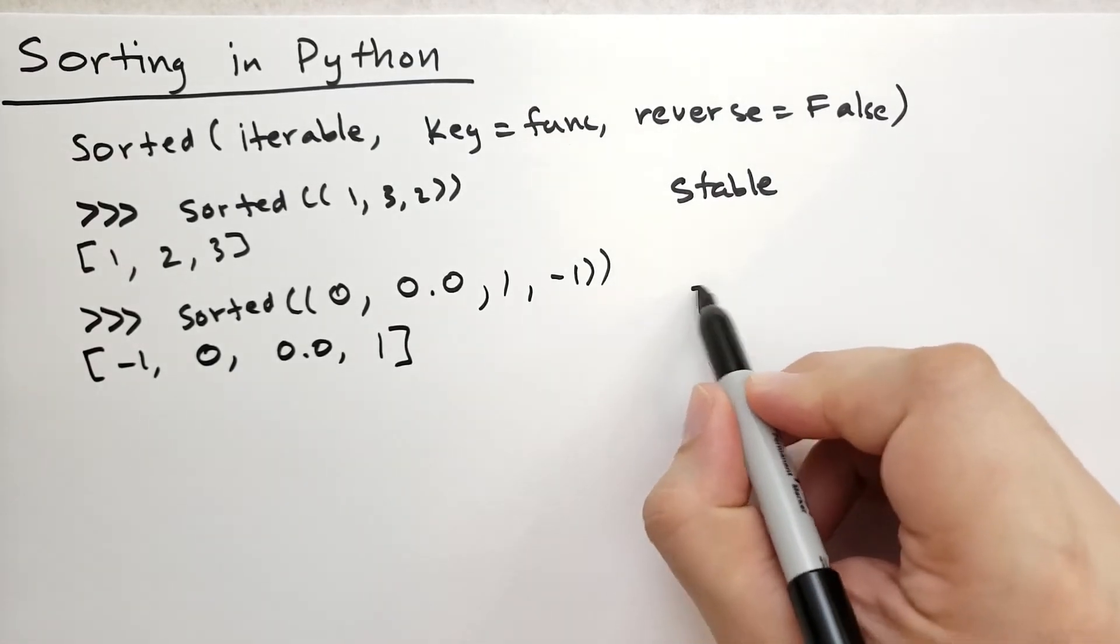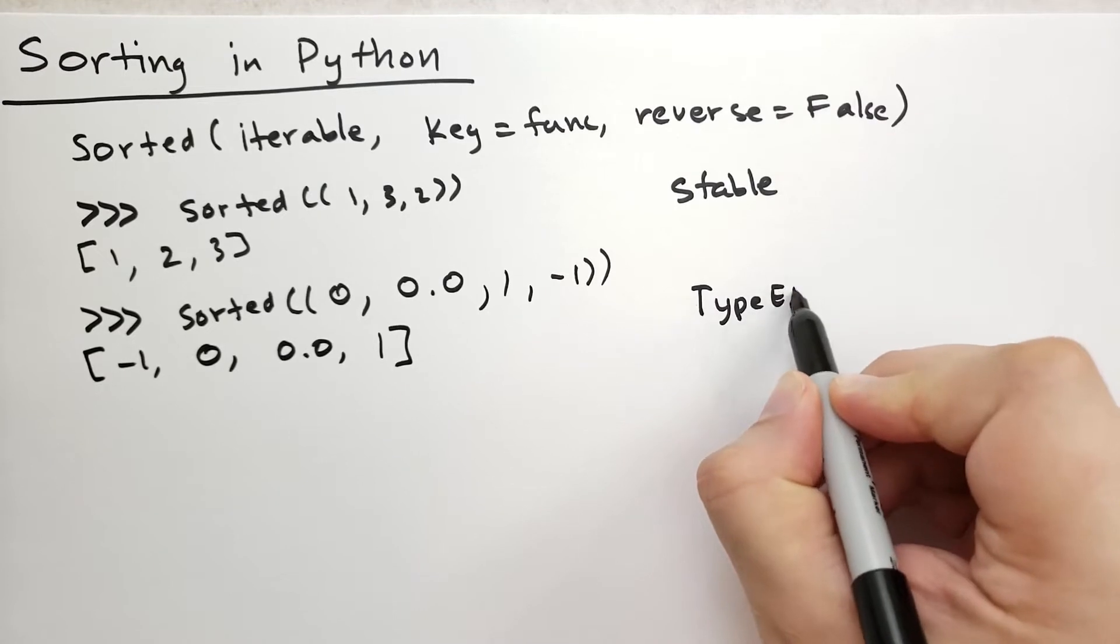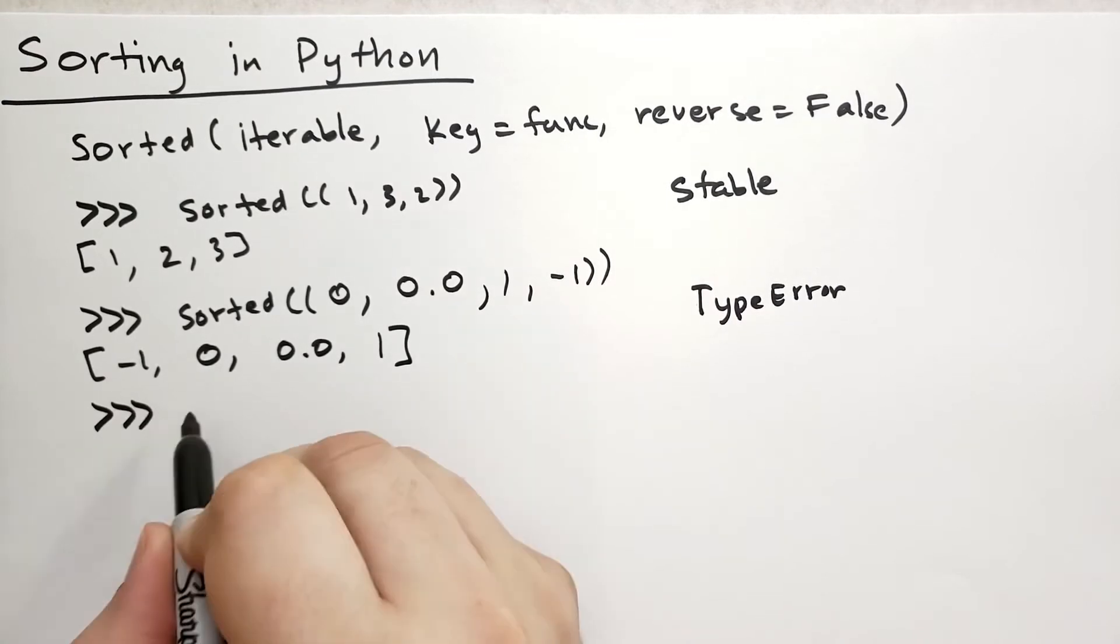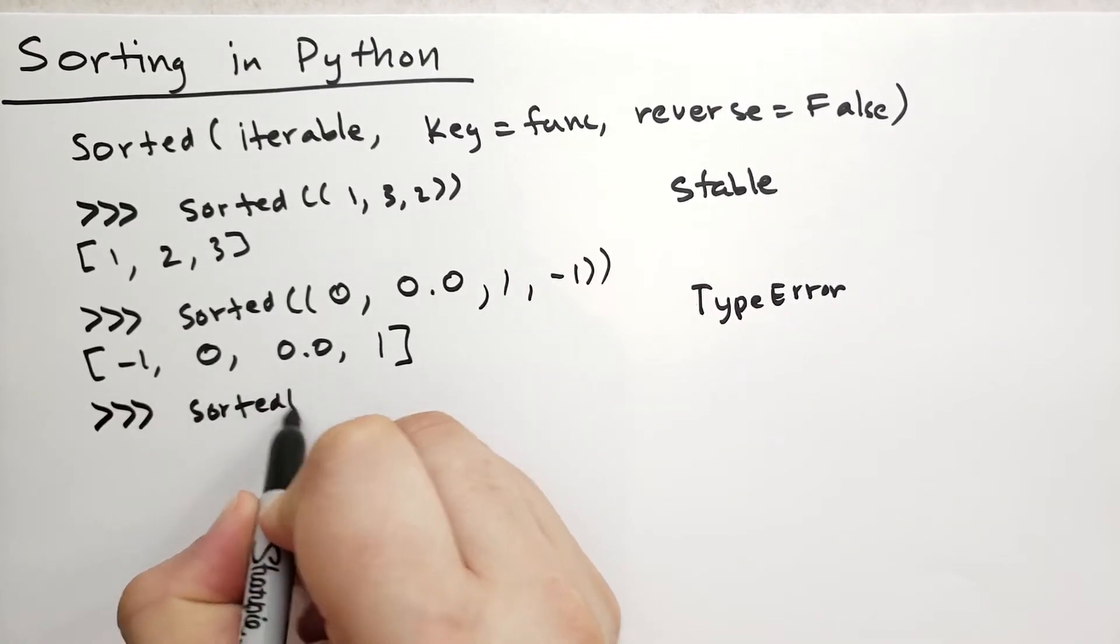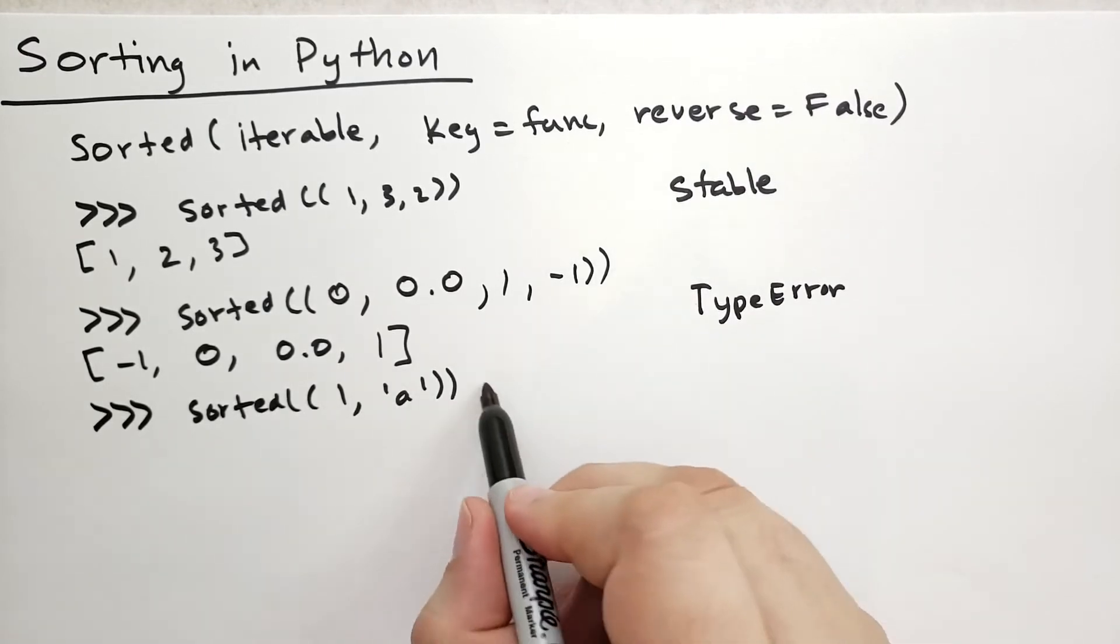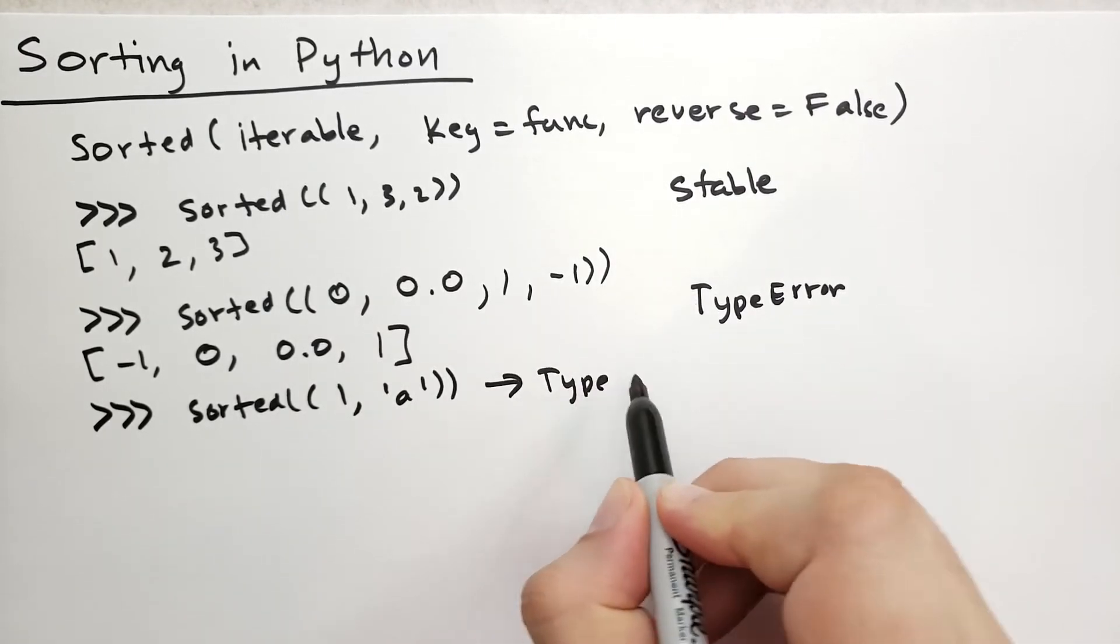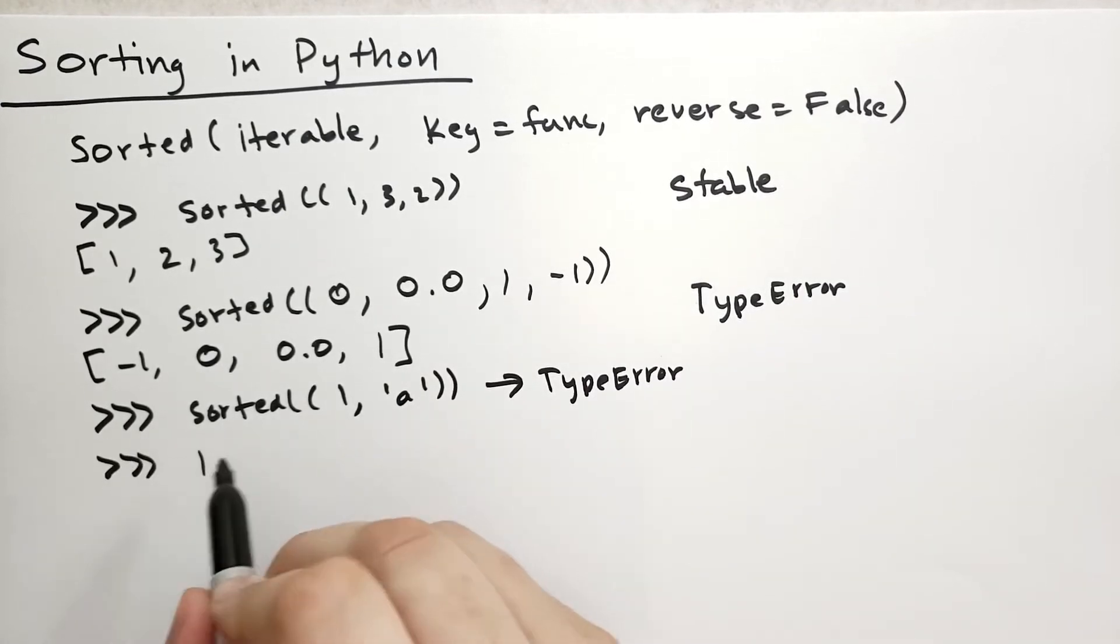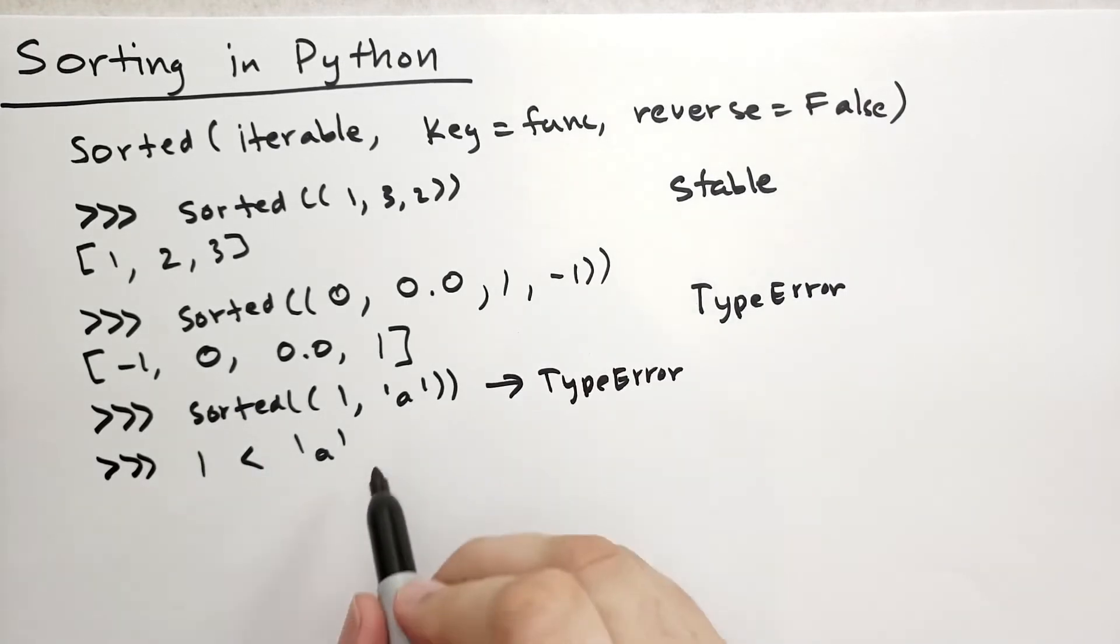Note that sorted will raise a type error if it can't compare the elements to each other. For instance, if you tried sorted of 1 and the letter A as a string, this is going to raise a type error. The reason is because you can't compare like is 1 less than A - it doesn't make any sense in Python.